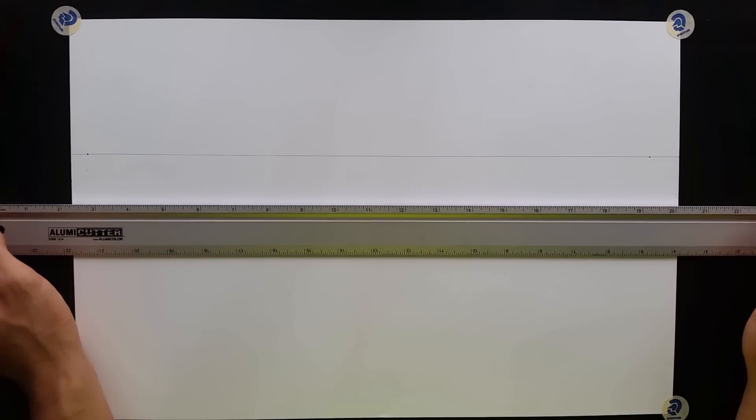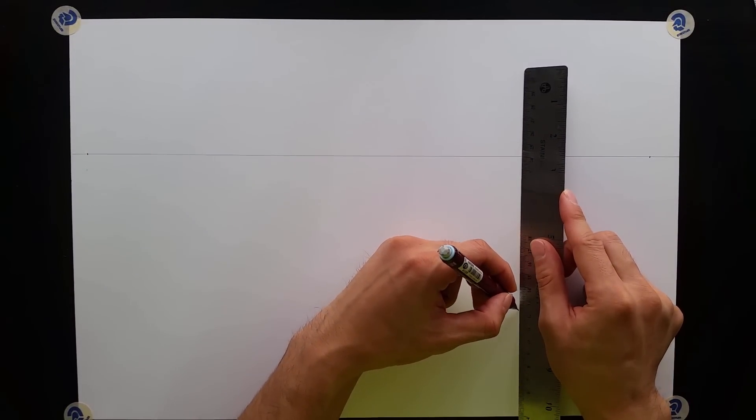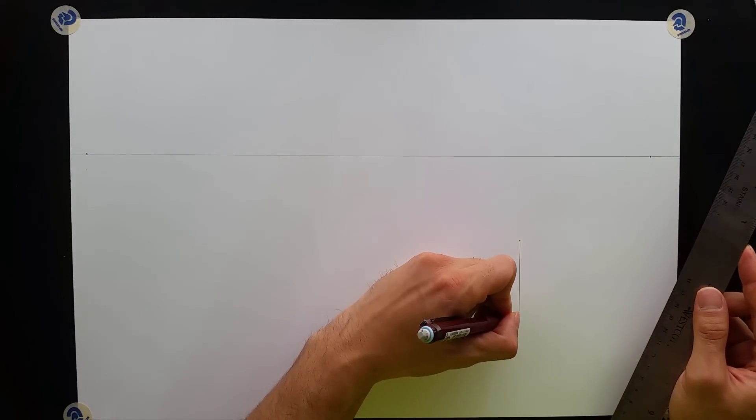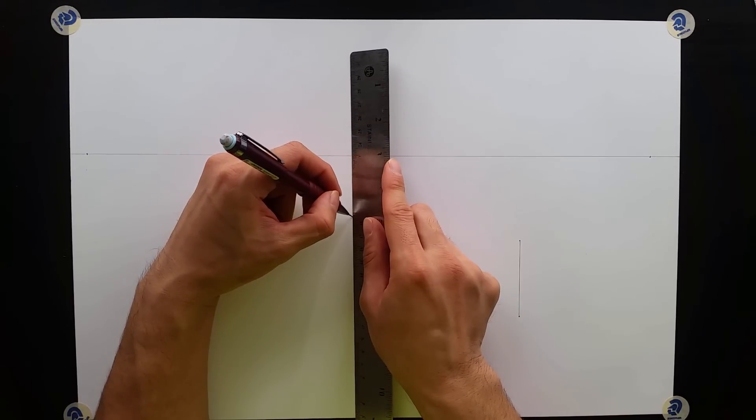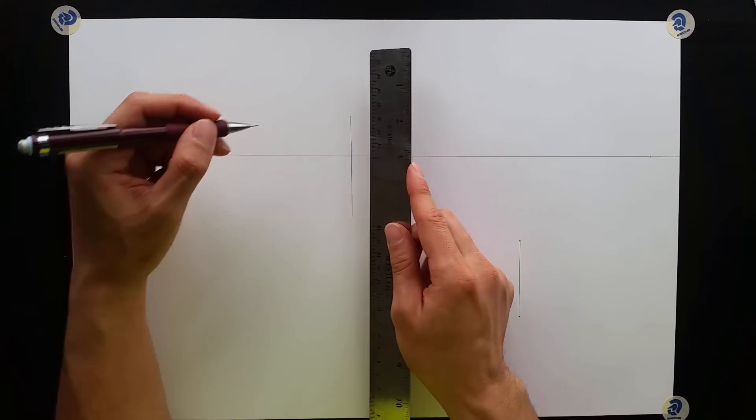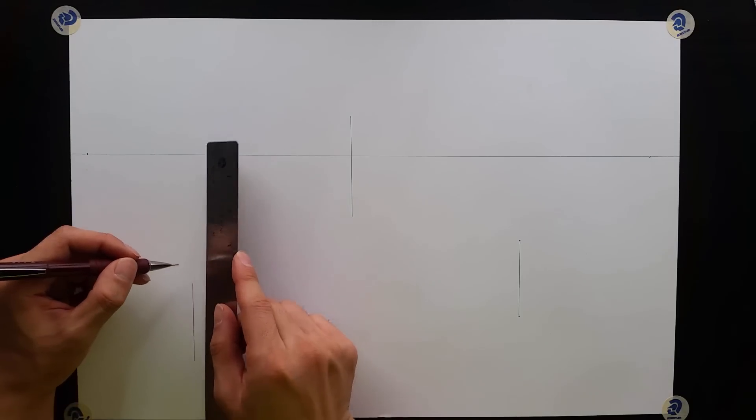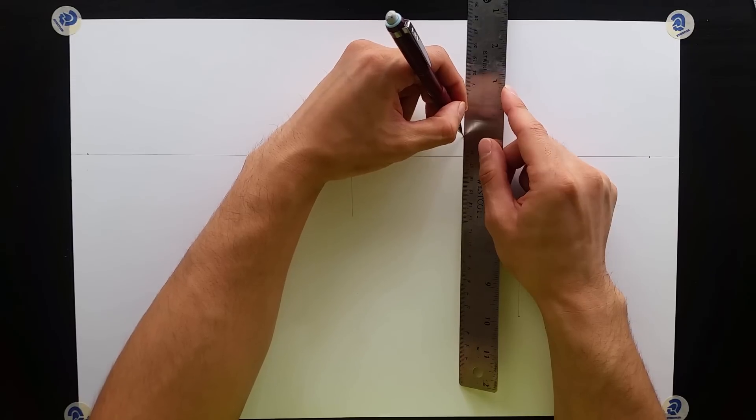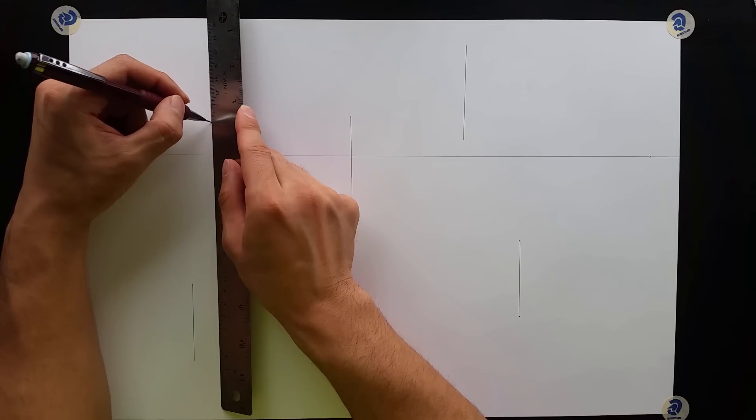And then from here I'm going to switch to my smaller ruler and start drawing vertical lines. You can also dot these out too. You can have some that cross the horizon, some that are below, some that are above, some that are smaller, some that are bigger.